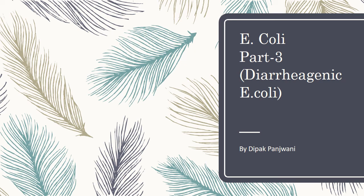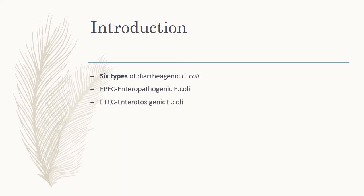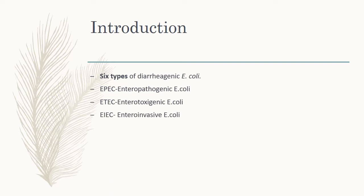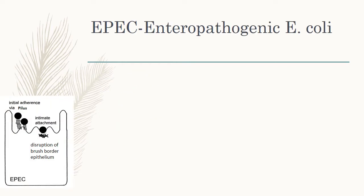Welcome to realization of E. coli part 3 — diarrheogenic E. coli. There are six types of diarrheogenic E. coli: EPEC (enteropathogenic E. coli), ETEC (enterotoxigenic E. coli), EIEC (enteroinvasive E. coli), EHEC (enterohemorrhagic E. coli), EAEC (enteroaggregative E. coli), and the last one is DAEC — diffusely adherent E. coli.